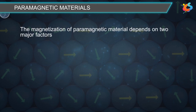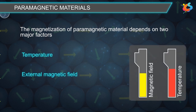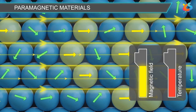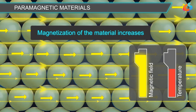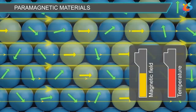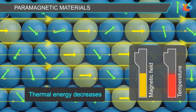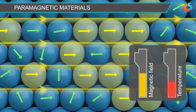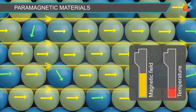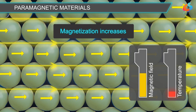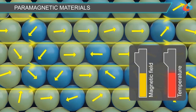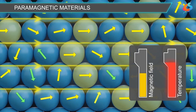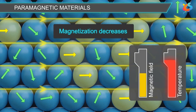The magnetization of paramagnetic material depends on two major factors: temperature and external magnetic field. As the magnetic field increases, more dipoles can overcome the thermal energy and align with the field, so magnetization increases. When temperature decreases, the thermal energy decreases, and more dipoles align with the field — magnetization increases. Conversely, if temperature is increased, the thermal energy increases, some already-aligned dipoles become randomly oriented, and magnetization decreases.